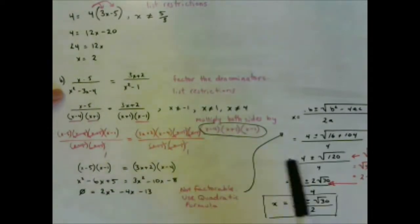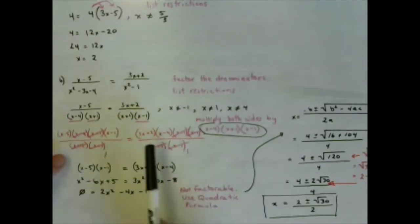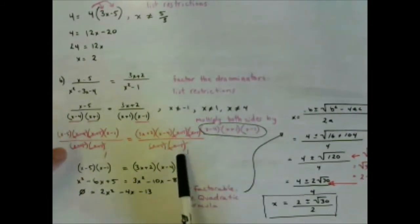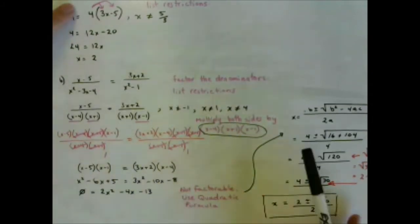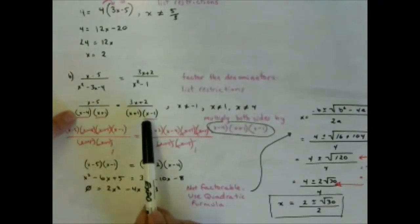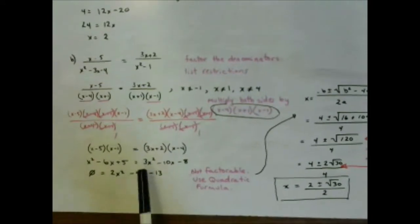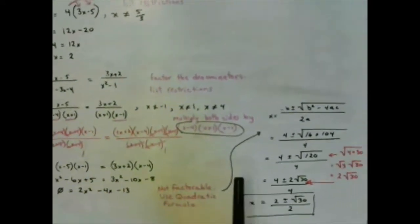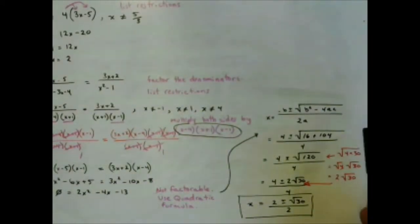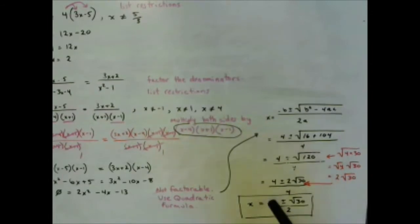Running through the steps quickly: factor the denominator and list all restrictions; use the factors to multiply both sides and eliminate all denominators; simplify and expand; set equal to zero and solve — in this case using the quadratic formula. The trick with the quadratic formula is to simplify the radical by factoring out a perfect square. Here we factored 120 into 4·30, got √4 = 2, giving 2√30, then all three terms were divisible by 2, reducing further.